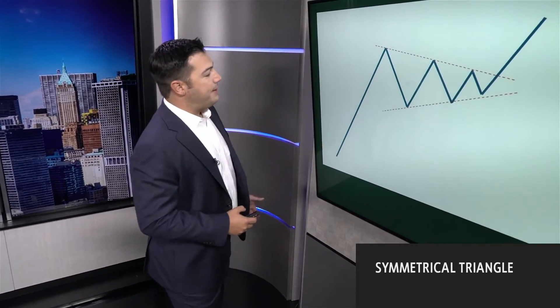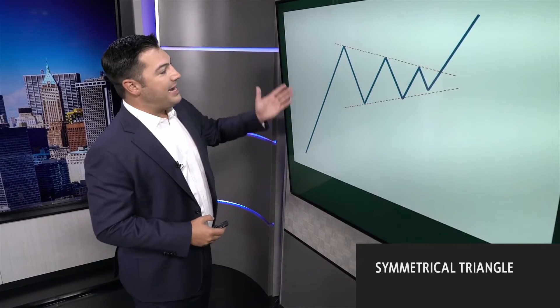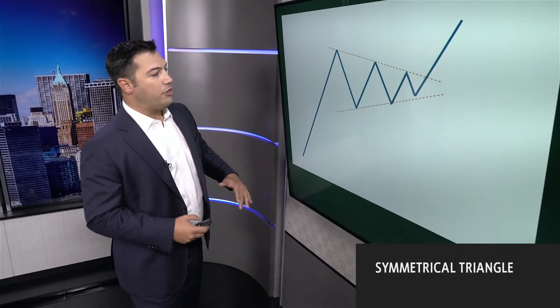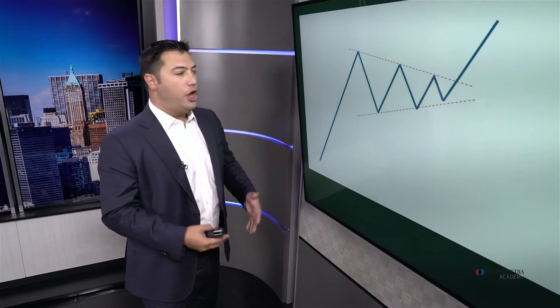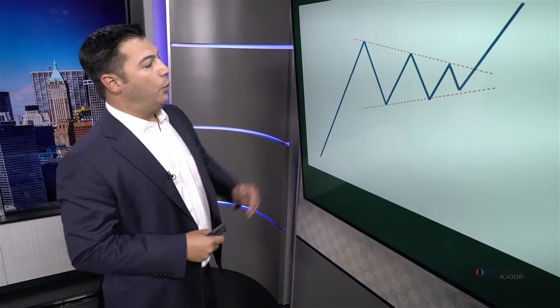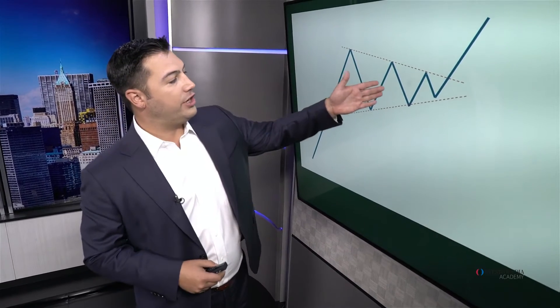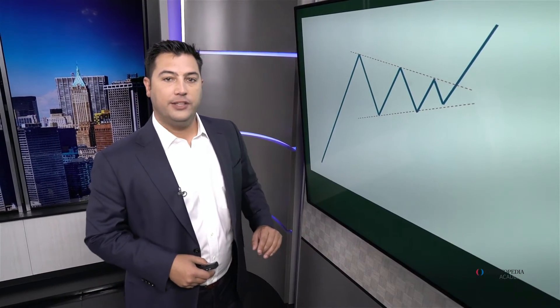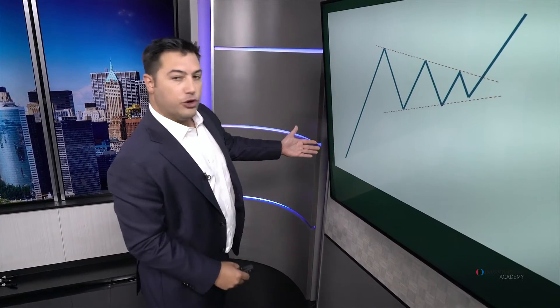One of the more popular continuation patterns is the symmetrical triangle. Here we have a prior uptrend in place, and then a consolidation over time where the market is essentially digesting those gains. Nothing goes straight up, but in an uptrend you have sideways consolidations. In a symmetrical triangle, prices consolidate within converging trend lines. We expect to see a resolution out of that somewhere between two-thirds and three-quarters of the way to the apex — breaking out and resolving higher in the direction of the prior trend. This is normal, this is typical.